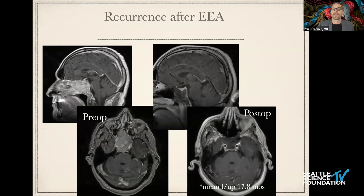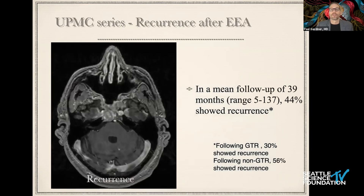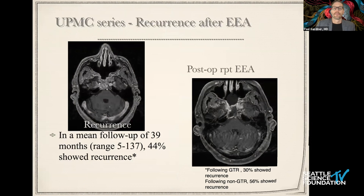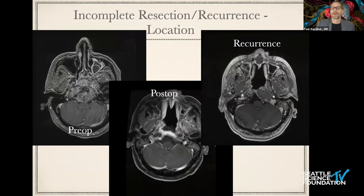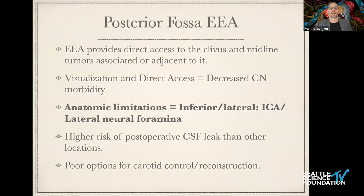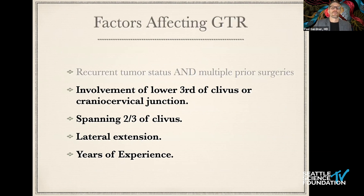We do get recurrence, and like with meningiomas, we learn from our recurrences. Gross total resection was the most significant predictor of non-recurrence — only 30% of the time did we see recurrence after gross total resection. We learned that most recurrences were inferior lateral. Next to the carotid artery, obviously we didn't get as wide a resection. The anatomic limitations mean we really struggle inferiorly and laterally — the lateral neuroforamina are our limitation.